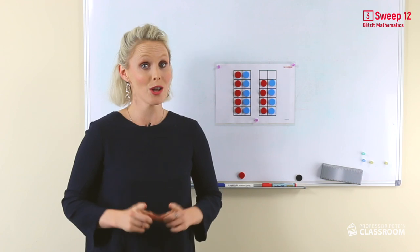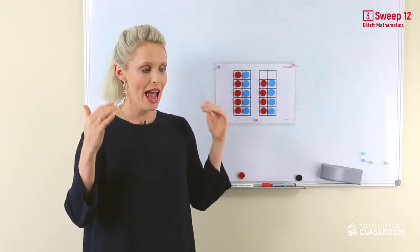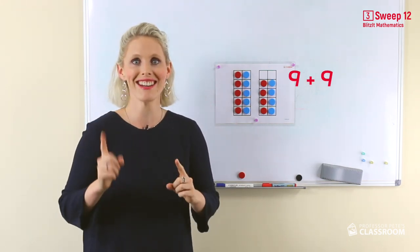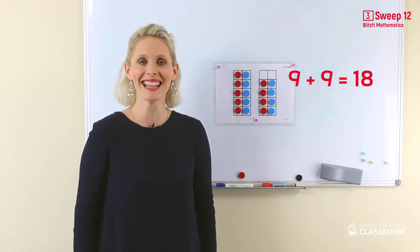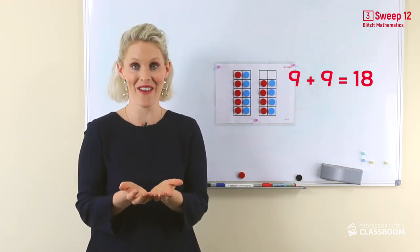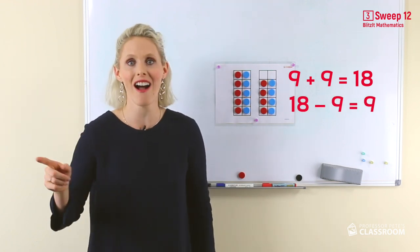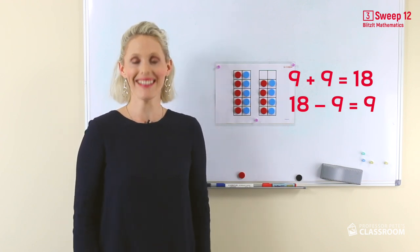Now you also know your addition number facts, your doubles. Think about 18 take away 9. Well, you know that 9 and 9 equals 18. That's in the number fact family. 18 take away 9 has to equal 9 because we know 9 and 9 equals 18.